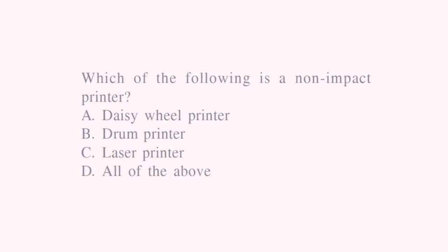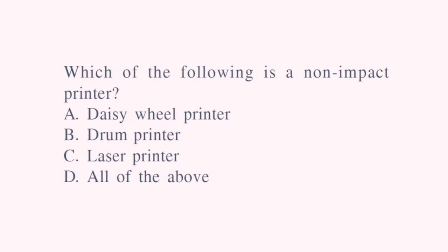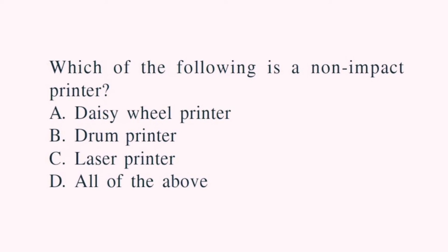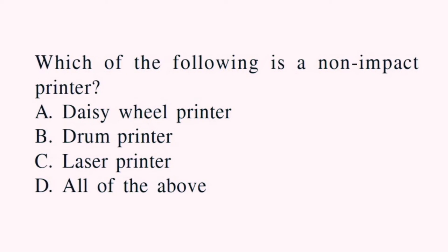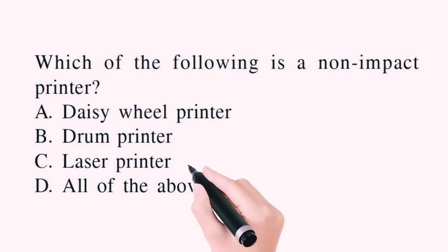Which of the following is a non-impact printer? Daisy wheel printer is an impact printer. Drum printer is also an impact printer. Laser printer is a non-impact printer. So the right answer will be the laser printer.